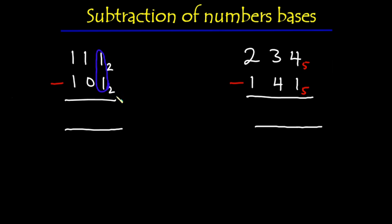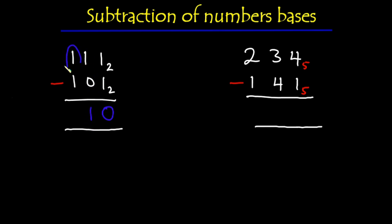We have 1 minus 1 which is 0, so we write 0 here. Then on the next column we have 1 minus 0 which is 1. Then on the last column we have 1 minus 1 which is 0, so the result is 010, which is the same as 10. Then you put your base, which is base 2, and you're done.